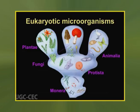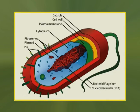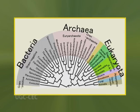Eukaryotic microorganisms possess membrane-bound cell organelles and include fungi and protists, whereas prokaryotic organisms — all of which are microorganisms — are conventionally classified as lacking membrane-bound organelles and include eubacteria and archaebacteria. Microbiologists traditionally relied on culture, staining and microscopy.